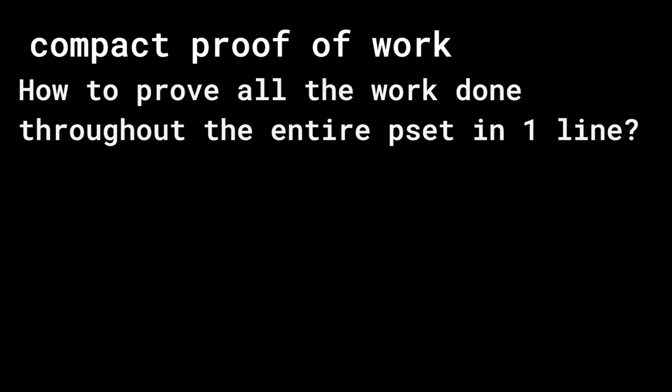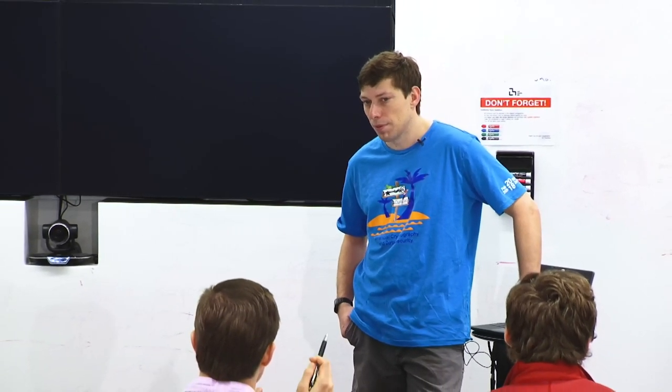So the question — how do you prove all the work ever done throughout the entire problem set in one line? How do you prove all the work from all 1,800 blocks with just one piece of data? Well, you know that for each block, 2 to the 33 work had to go into it. So you just need to know the number of blocks produced times that — but how do you prove the number of blocks without showing all of them?